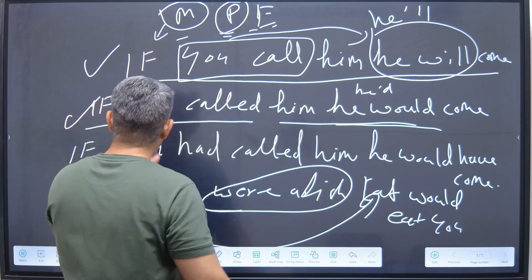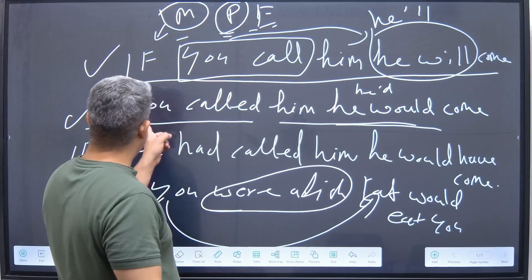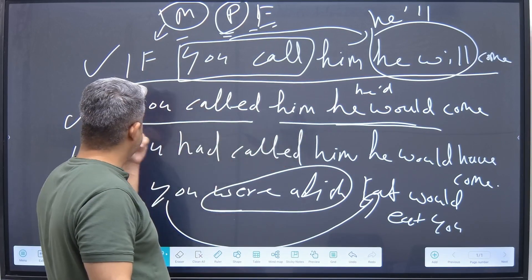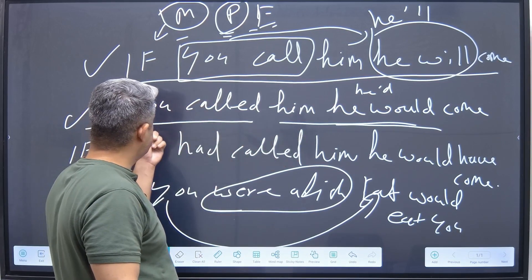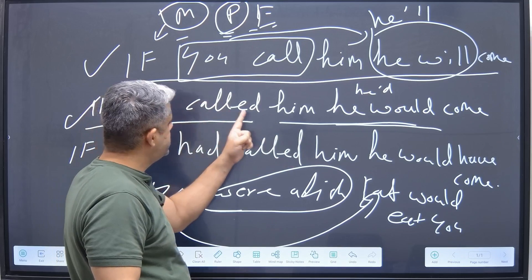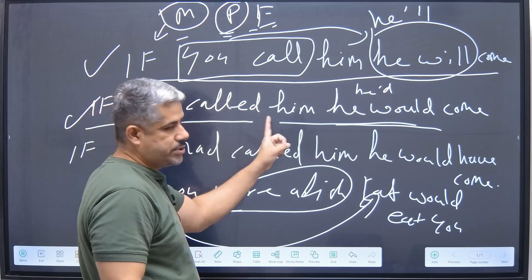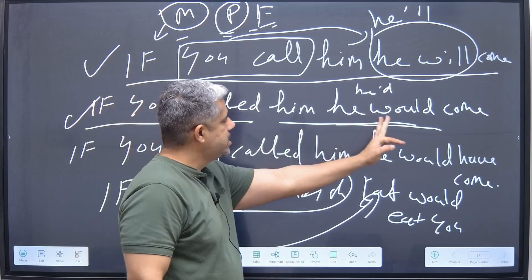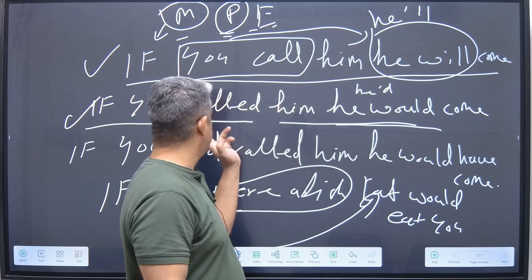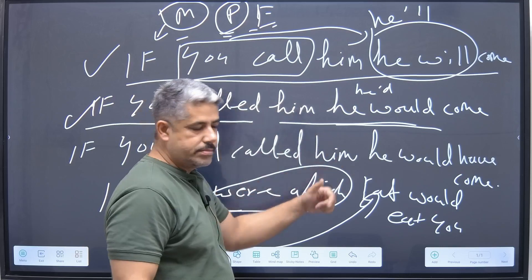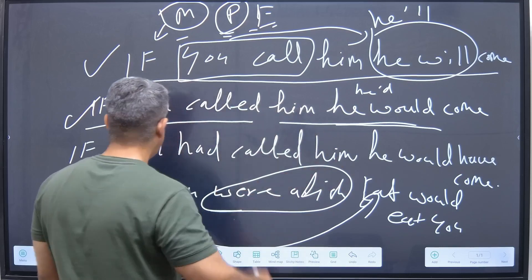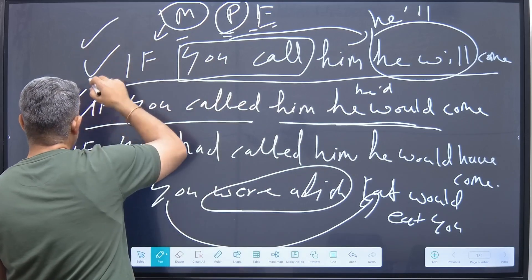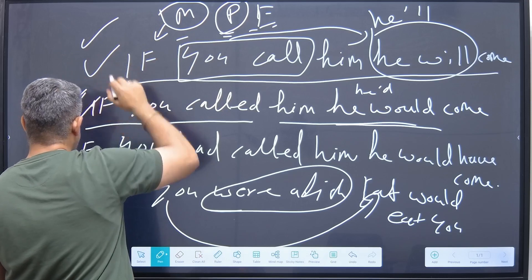Done deal. In this sentence — if you called him, he would come — the speaker doesn't want or expect you to call him, but he knows the result of a probable condition. So it's different: the first conditional is sure, the second is imaginary and suppose.